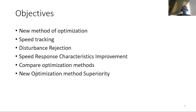The objective of this research work is to utilize a new optimization technique in order to achieve speed tracking and disturbance rejection on the system, and to improve the speed response characteristics of the unmanned vehicle, including the settling time and maximum overshoot.